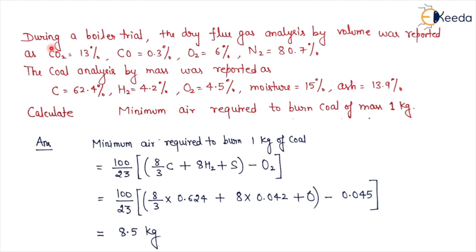The question says that during a boiler trial, the dry flue gas analysis by volume was reported as CO2 13%, CO 0.3%, O2 6%, N2 is equal to 80.7%. The coal analysis by mass was reported as carbon 62.4%, hydrogen 4.2%, oxygen 4.5%, moisture 15% and ash 13.9%. Calculate the minimum air required to burn the coal of mass 1 kg.